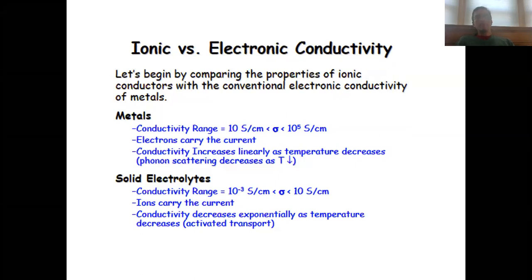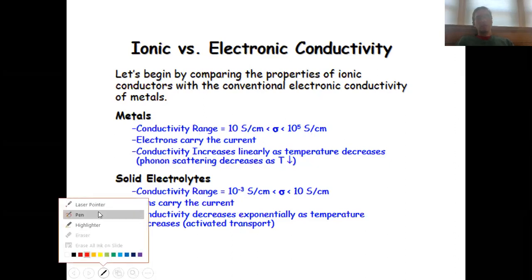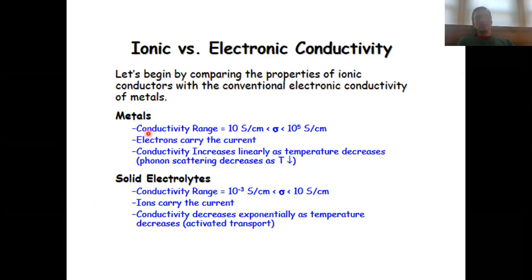Let us begin with a comparison between electronic conductors such as metals and ionic conductors. In metals, you have a conductivity range between circa 10 siemens per centimetre and 10 to the power of 5 siemens per centimetre. The electrons carry the current, and we've seen that the conductivity increases linearly as the temperature decreases due to the phonon scattering we discussed.